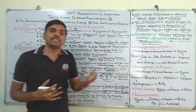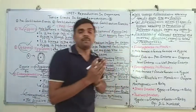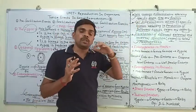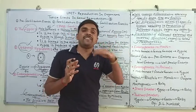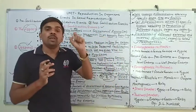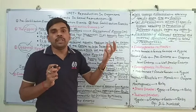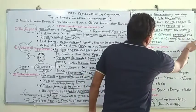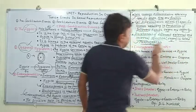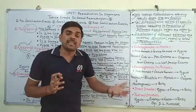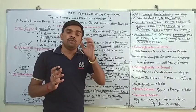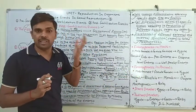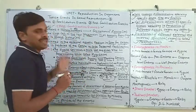Development of different external and internal structures and organs is called morphogenesis। Morphogenesis से मतलब है कि cells के differentiation से जो organ और tissue develop होते हैं उस mechanism को हम morphogenesis कहते हैं। यानि cells के differentiation से external और internal organs का development होना morphogenesis कहलाता है।